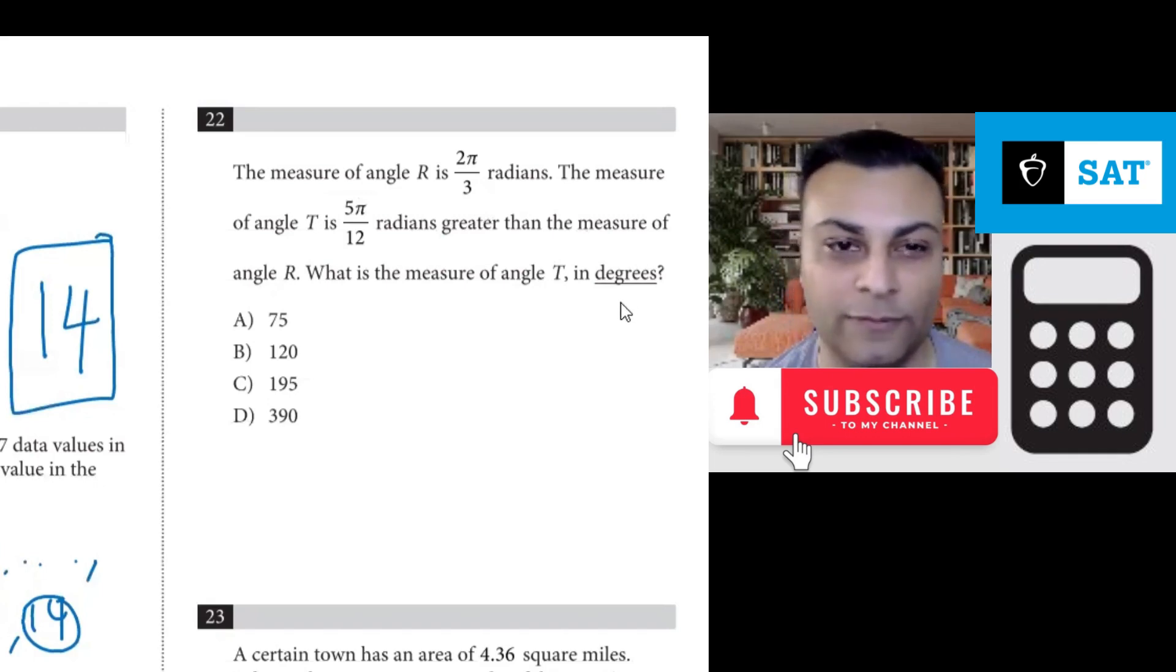Okay, there are a few ways to go about this problem. So angle r is 2π/3 and angle t is this much greater. So why don't we add them? So we'll do 2π/3 plus 5π/12. This will give you angle t because it's that much greater than r.